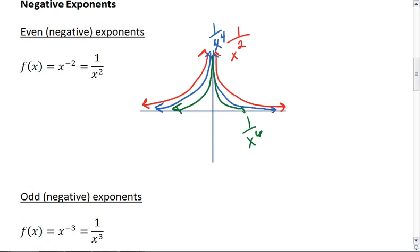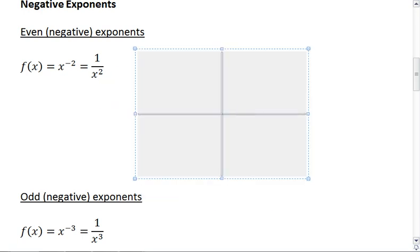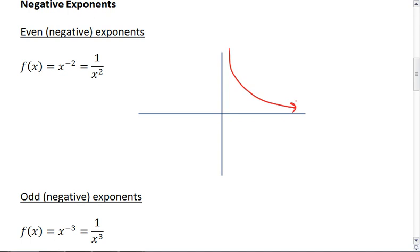But in general, what I want you to know is that 1 over x squared, or x to the negative 2, has this general shape.